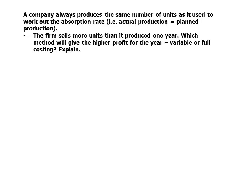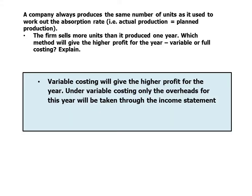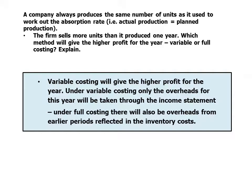Moving on to profit problems. A company always produces the same number of units as it used to work out the absorption rate, so actual production equals planned production. Problem one: the firm sells more units than it produced one year. Which method will give the higher profit for the year — variable or full costing? Variable costing will give the higher profit. Under variable costing, only the overheads for the year will be taken through the income statement. Under full costing, those units sold above the planned level will carry overheads from earlier periods reflected in the inventory costs.